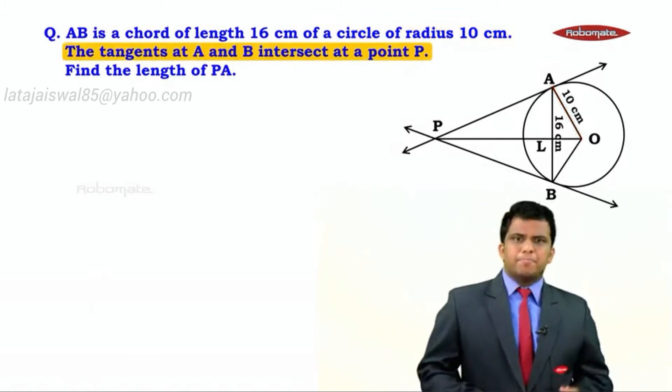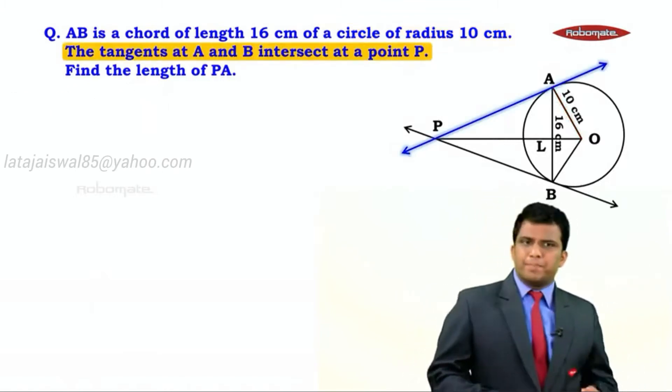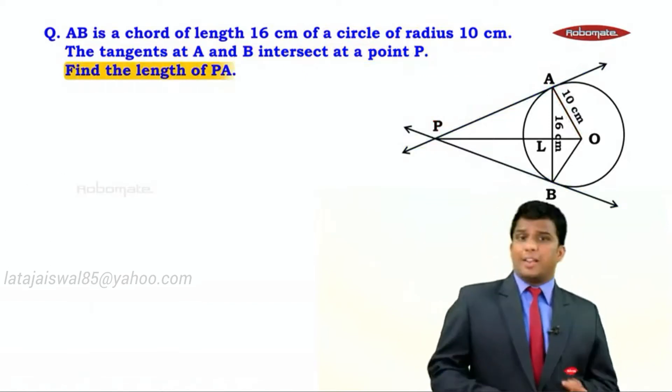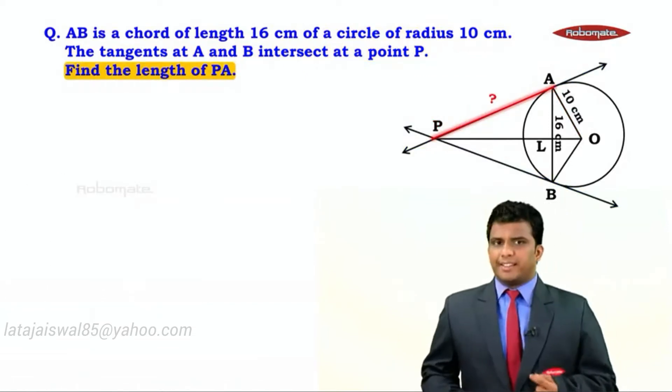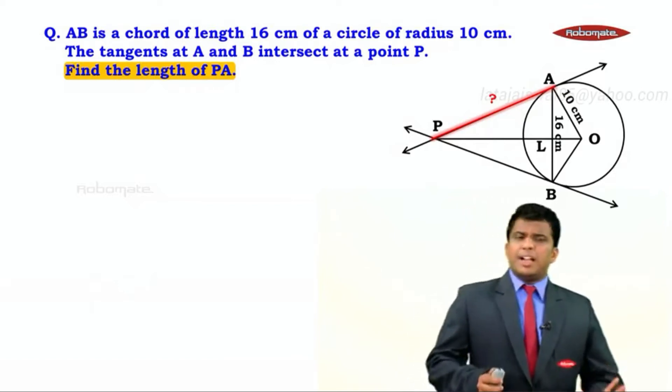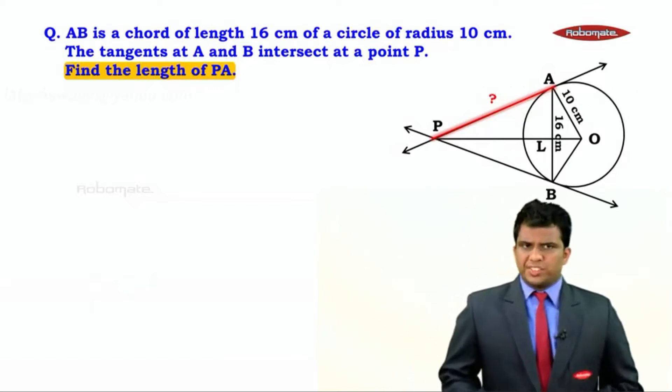The tangents at A and B intersect at a point P which is in the exterior, and we need to find the length of PA, right? That's a question mark over here. Now, to start with, what are we going to do with this problem?